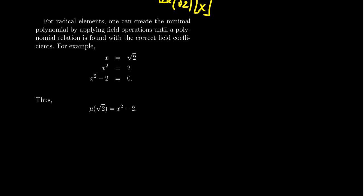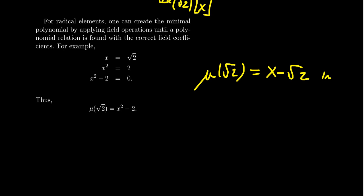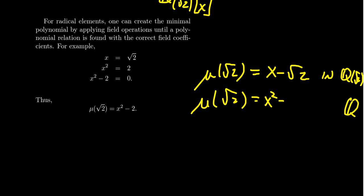I should emphasize that this is the minimal polynomial over the rational field. If you want the minimal polynomial of √2 over Q(√2), then you just get x - √2. So it matters which field you're referring to. The base field matters, and that's why the minimal polynomial depends on which field you're looking at.